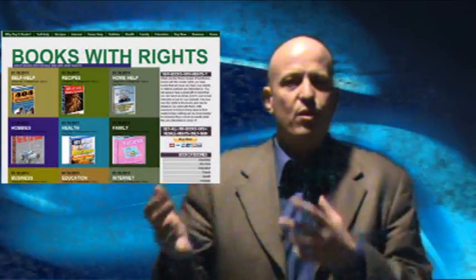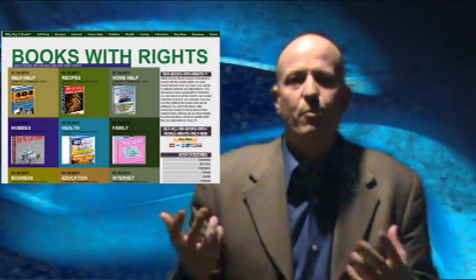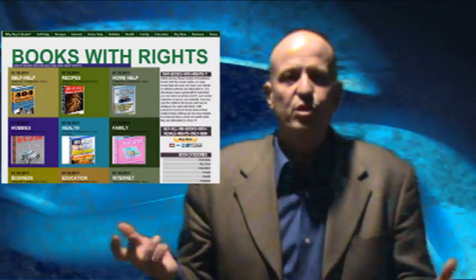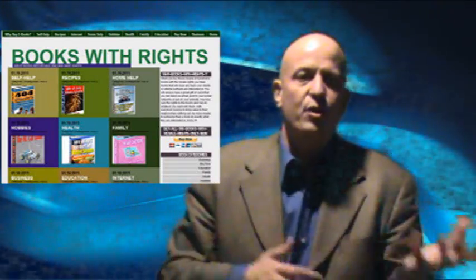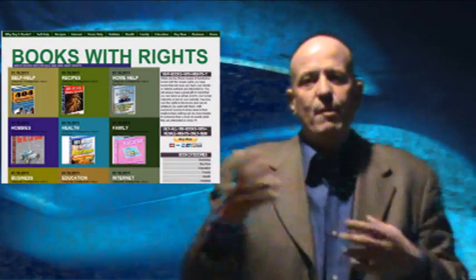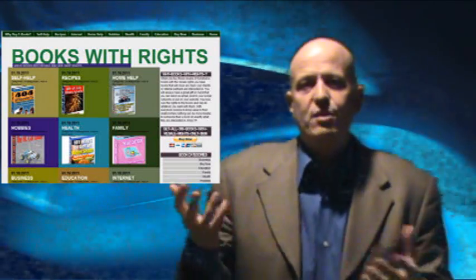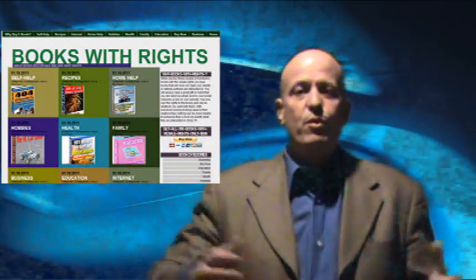So last week I did a tip on a site bookswithrights.com, where you can go there, pay 10 bucks, and download 200 ebooks that you now have the rights to. So you can give them away on social networks, you can post them to your blog or your website, you can send them out through email. It ends up being five cents a book, and you literally have a library of 200 books that you can use as gifts.